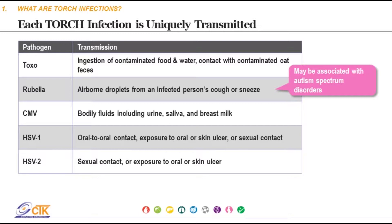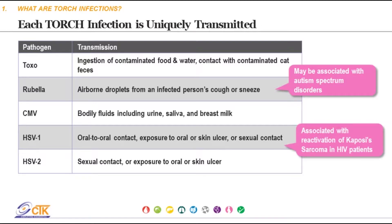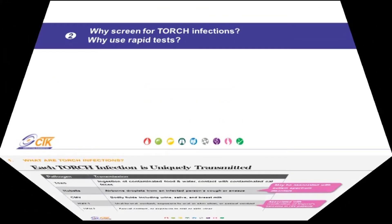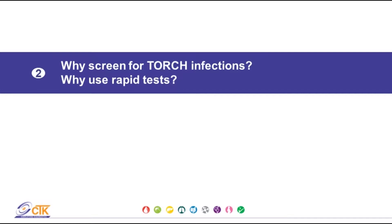Cytomegalovirus, or CMV, is transmitted by urine, saliva, and other bodily fluids. It is commonly transmitted by sexual contact and is the most common viral infection in transplant recipients. Herpes Simplex Virus, HSV1 and HSV2, can be transmitted by contact with cutaneous ulcers, salivary secretions, and sexual contact. HSV2 is the main cause of genital herpes, and studies have linked HSV1 to certain cancers.